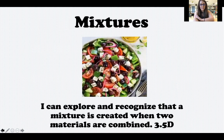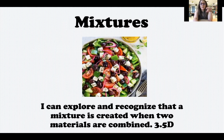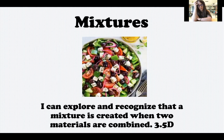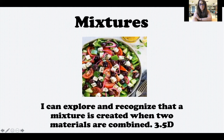Let's go back to the picture of the salad. We have two or more ingredients combined together — I have tomatoes, onions, peppers, and it looks like olives maybe. It can be easily separated, so if I don't like tomatoes I can use my hands or a fork and pick them out. The ingredients keep their physical properties, meaning they don't change — they're the same size, shape, and color. Those still look like tomatoes, olives, and bell peppers; they've kept their physical properties.